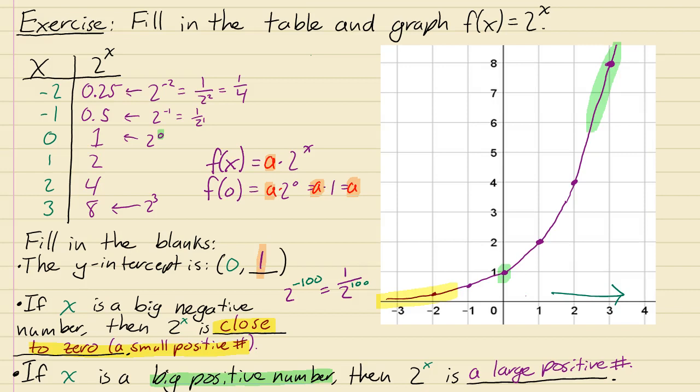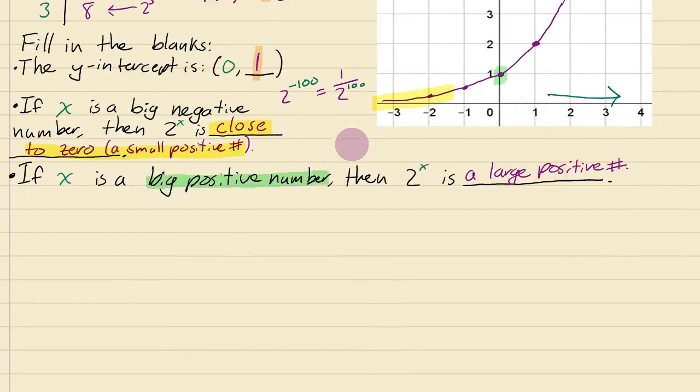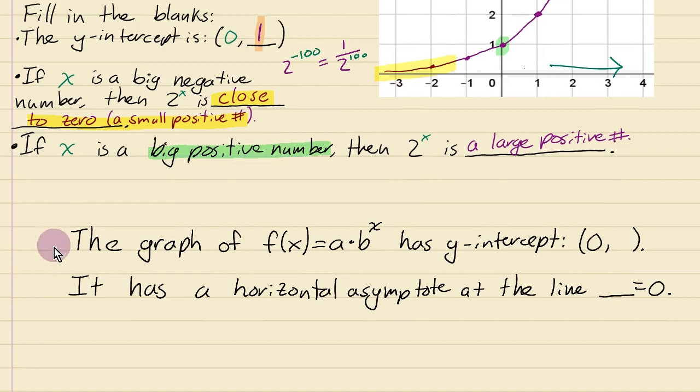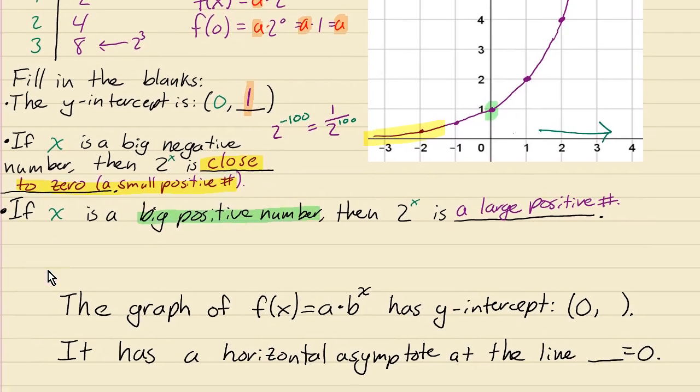Let's try to summarize a few of these points about them in general. So to just summarize these points in general, what is the graph of f(x) equals a times b to the x do? Fill in the blank here about this y-intercept.